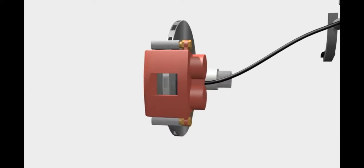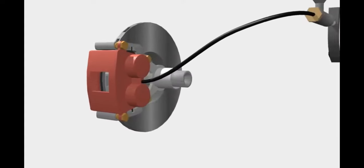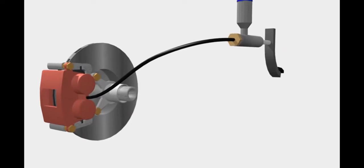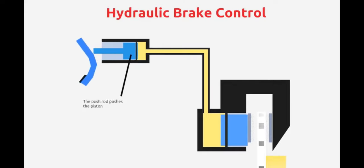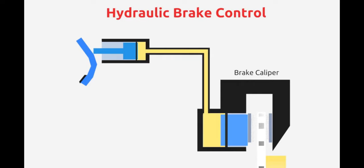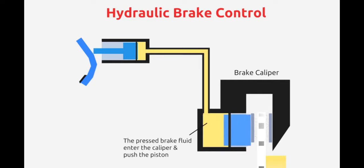The latest cars generally use a hydraulic brake system. The hydraulic system functions to move energy from the pedal to the actuator more effectively. When we press the pedal, the push rod is pushed so that the piston inside the master cylinder is also pushed. The movement of the piston presses the fluid so that it moves outward. In the brake caliper, a piston connected to the fluid from the master cylinder causes the pushed fluid to enter the caliper and push the piston.